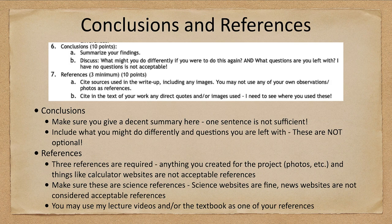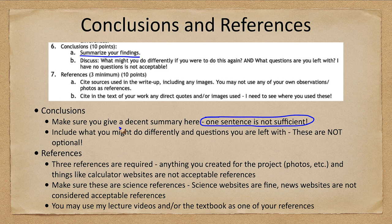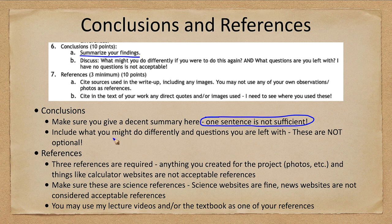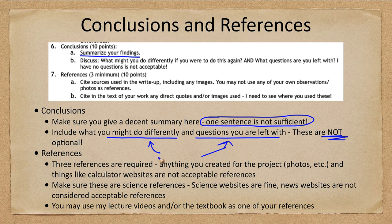For conclusion and references, summarize what you found. One sentence is not sufficient—you're going to have to write a few sentences to summarize what you've gotten out of the project. Make sure you include what you might do differently and what questions you're left with. These are not optional—you will lose credit if you don't include either of these two parts.